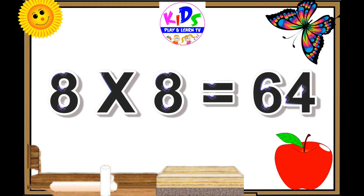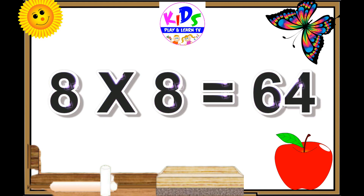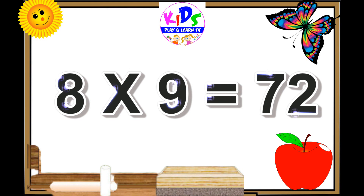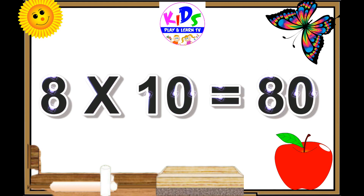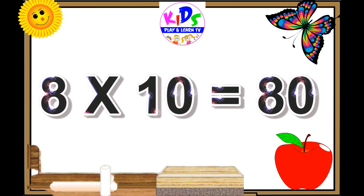Eight sixes are forty-eight, eight sevens are fifty-six. Eight eights are sixty-four, eight eights are sixty-four. Eight nines are seventy-two, eight nines are seventy-two. Eight tens are eighty, eight tens are eighty.